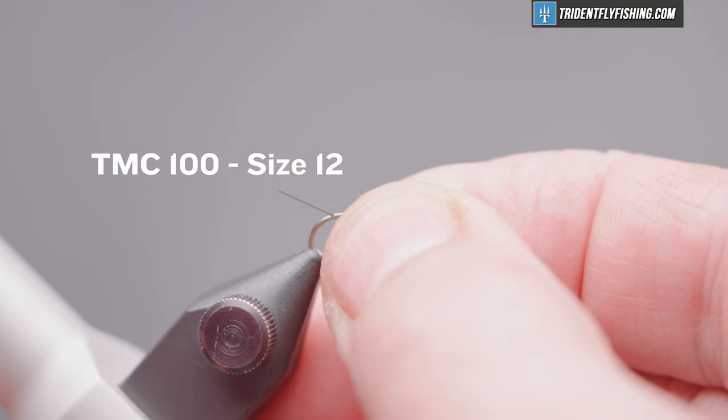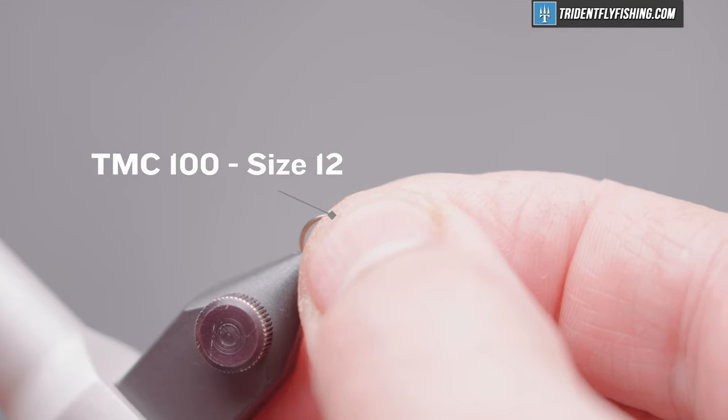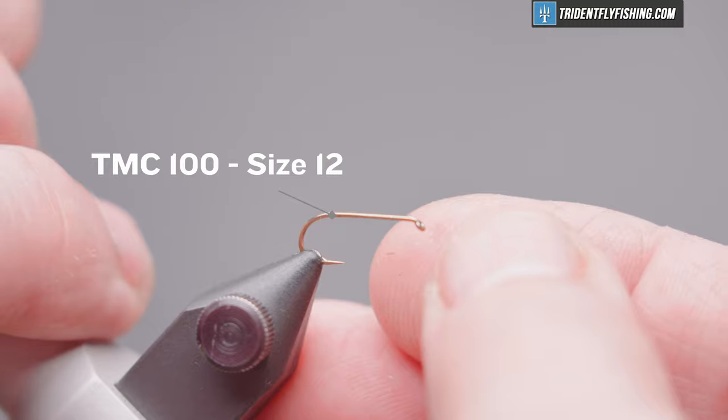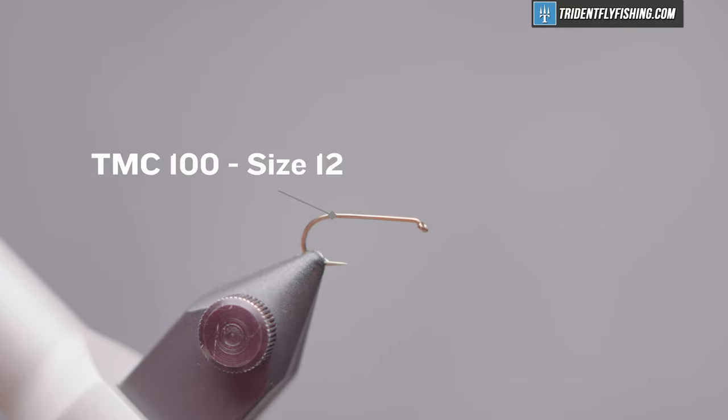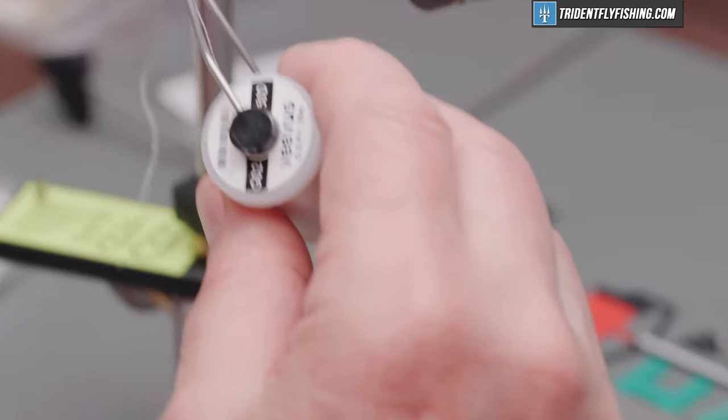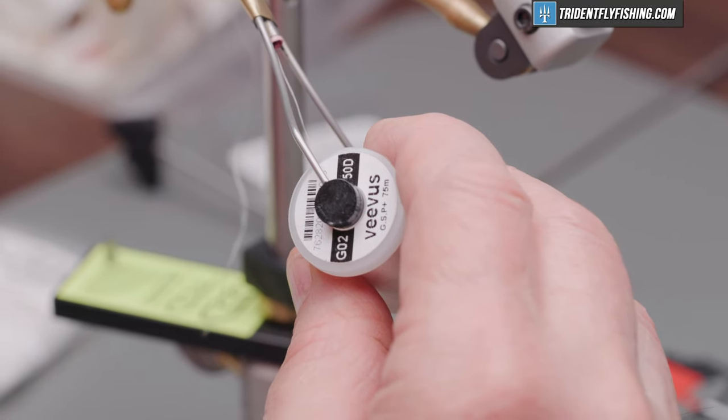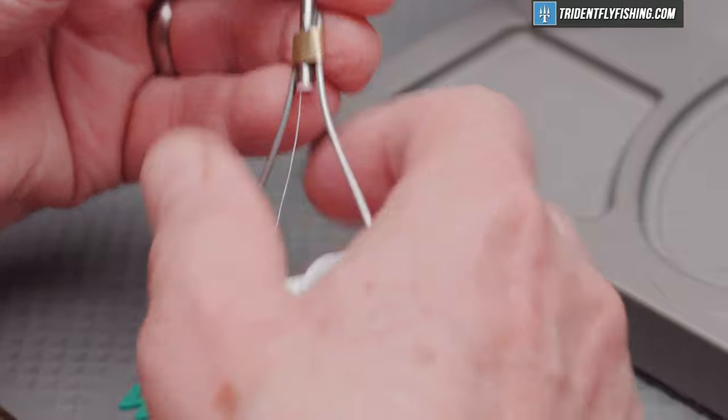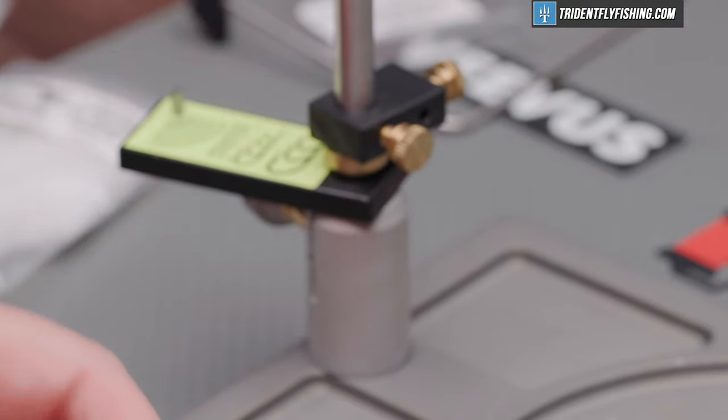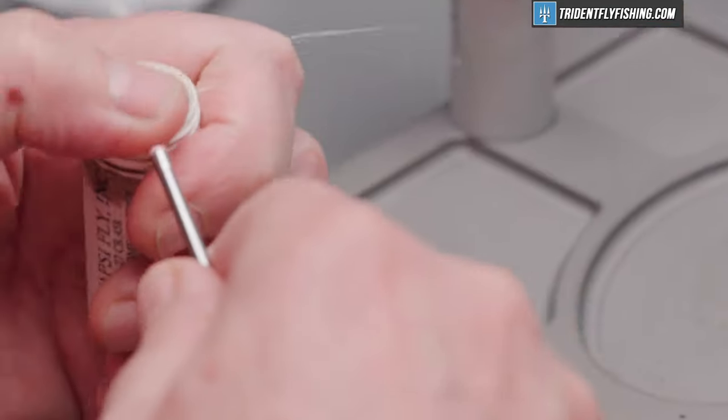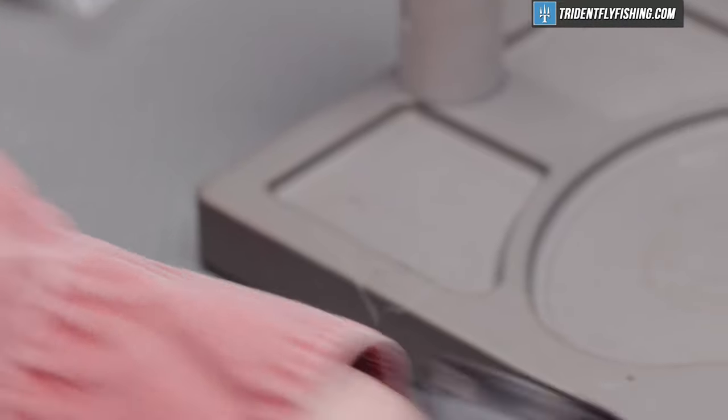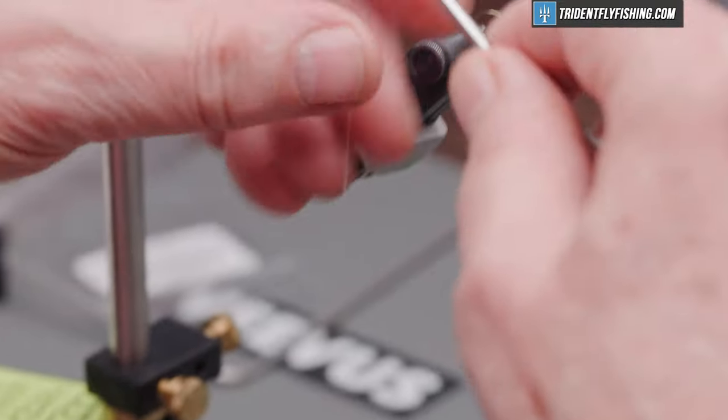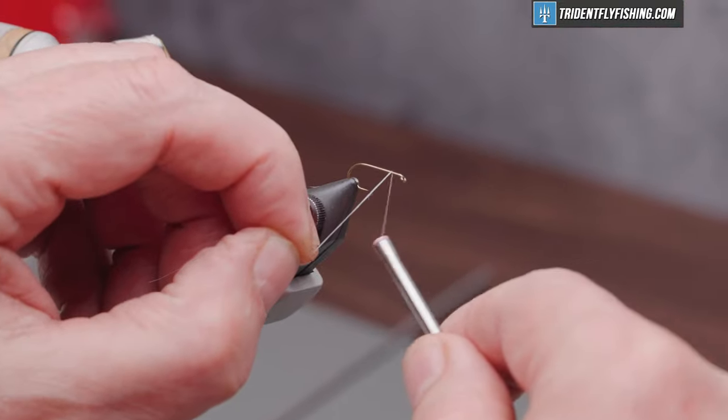So the hook we're going to use today is a TMC 100 in size 12. That's our standard dry fly hook. And the thread we're going to use today is Vivas GSP 50D. I like this because I really like to pull on the materials in this fly because they're so slippery. And we'll get a little bit of wapsy wax on there to get the thread started because it's slippery too.